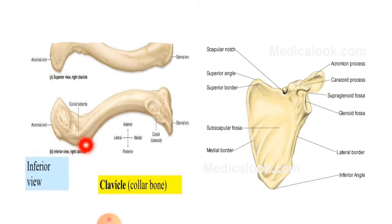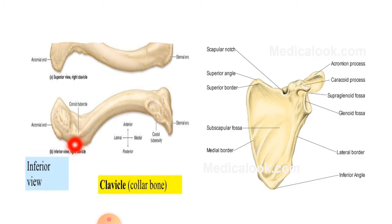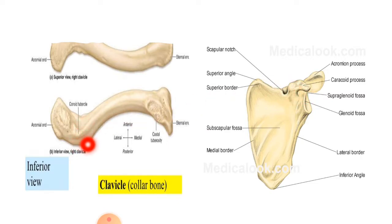If we look at the clavicle bone from the inferior aspect, you can appreciate another projection which is the conoid tubercle. This tubercle is basically for the conoid ligament, and this ligament is part of the coracoclavicular ligament, which attaches the clavicle to the coracoid process of the scapula. So the conoid tubercle basically attaches the clavicle with the coracoid process of the scapula.